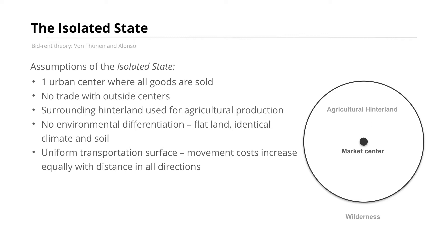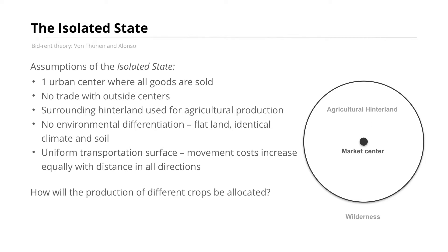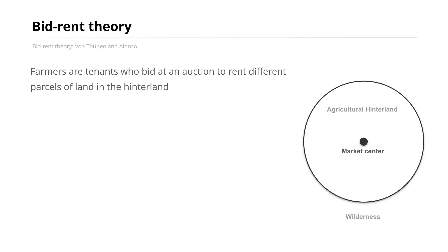The model also assumes a uniform transportation service, where movement costs increase equally with distance in all directions. There are no pre-existing roads that would reduce transportation cost in any specific direction — transportation cost is purely a function of distance from the market center. Given this ideal isolated state, the question is: how will the production of different crops be allocated throughout this agricultural hinterland? The mechanism invented to describe this process is known as bid-rent theory.